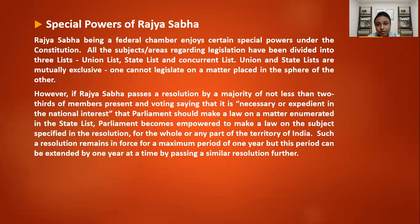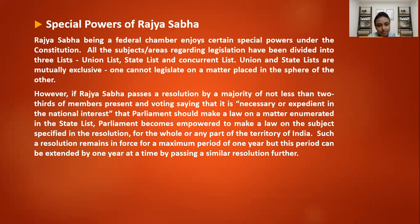Union and state lists are mutually exclusive — one cannot legislate on a matter placed in the sphere of the other. However, if Rajya Sabha passes a resolution by a majority of not less than two-thirds of members present and voting, saying that it is necessary or expedient in the national interest that parliament should make a law on a matter enumerated in the state list, parliament becomes empowered to do so. Such a resolution remains in force for a maximum period of one year but can be extended by one year at a time by passing a similar resolution.